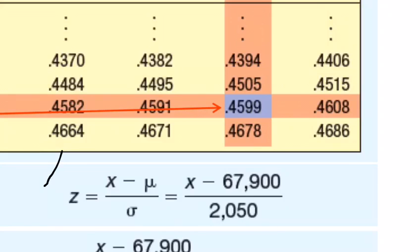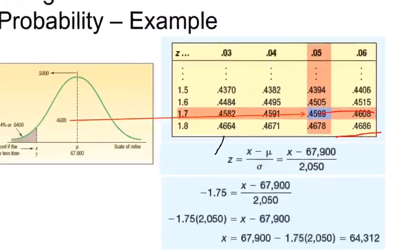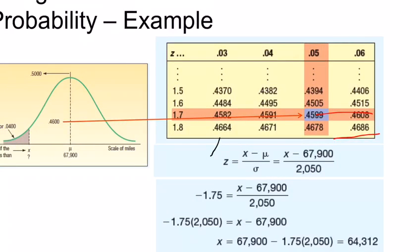When you look at this, you will see that the closest value to that value is 0.4599. If you look at the Z value, it's 1.7, and in the column and in the row is 0.05, so 1.75. You already know that it's on the negative side. Find the Z, put it in the formula, calculate the x value.